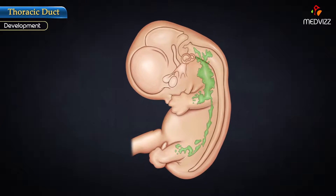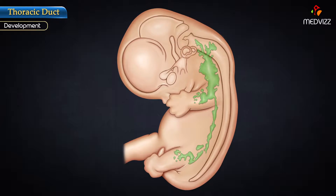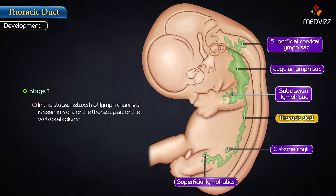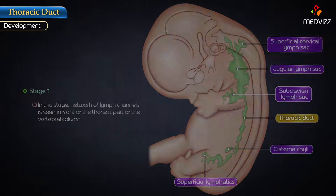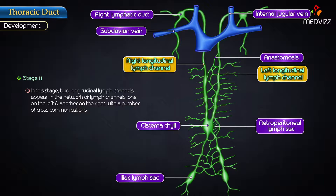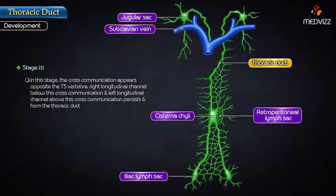Development. There are three stages in the development of the thoracic duct. Stage 1: a network of lymph channels is seen in front of the thoracic part of the vertebral column. Stage 2: two longitudinal lymph channels appear in the network — one on the left and another on the right — with a number of cross communications. Stage 3: a cross communication appears opposite the 5th thoracic vertebra. The right longitudinal channel below this cross communication and the left longitudinal channel above this cross communication persist and form the thoracic duct, while all other parts disappear.